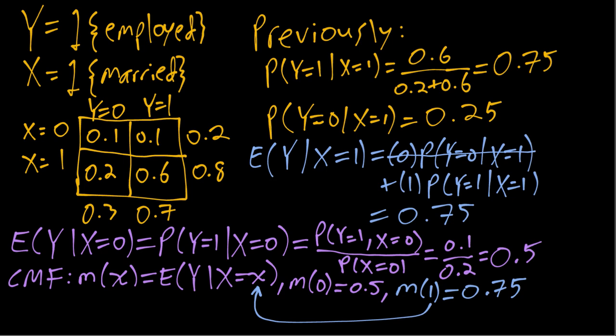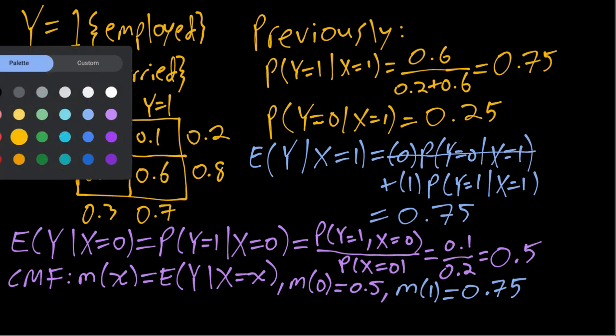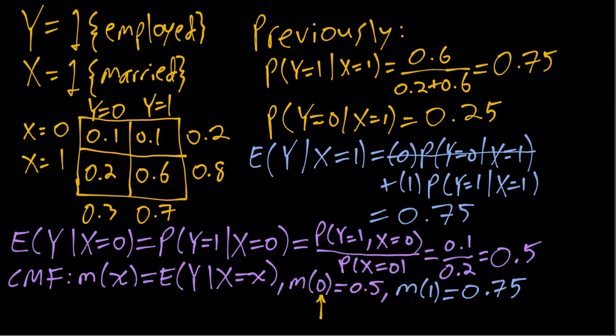Our CMF here is a function in the sense that we give it some input number like zero, and then it gives us back the corresponding conditional mean. We can think of it like any other function. We can draw a graph with x over here and 0.5, 0.75, and think about m of x.